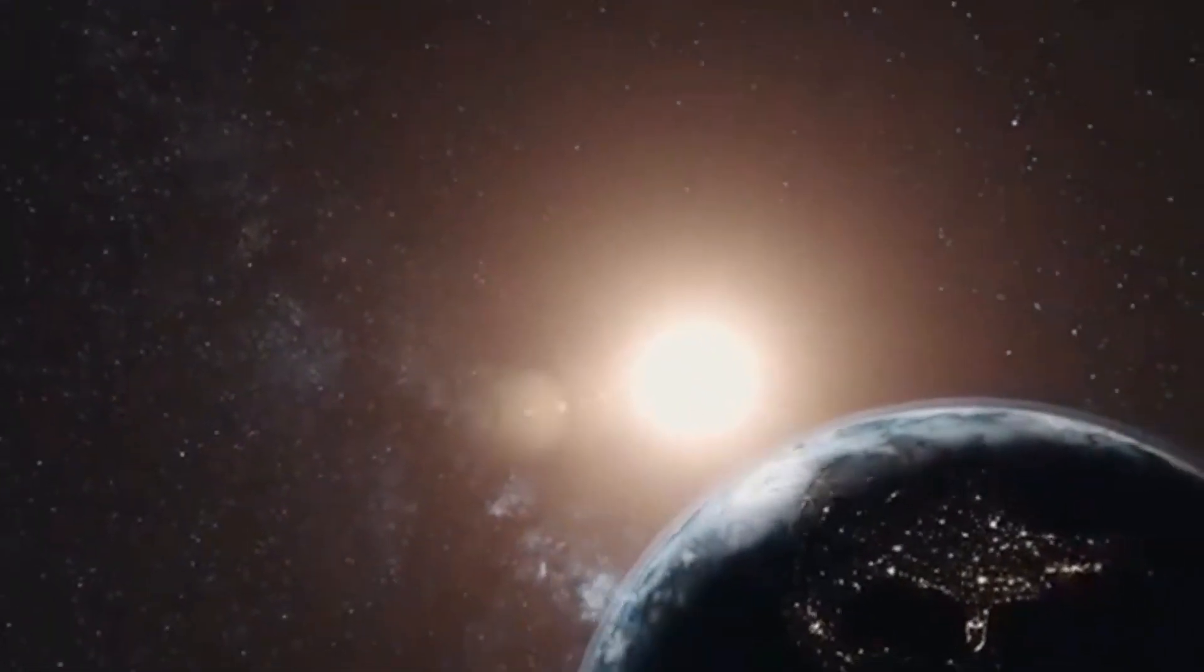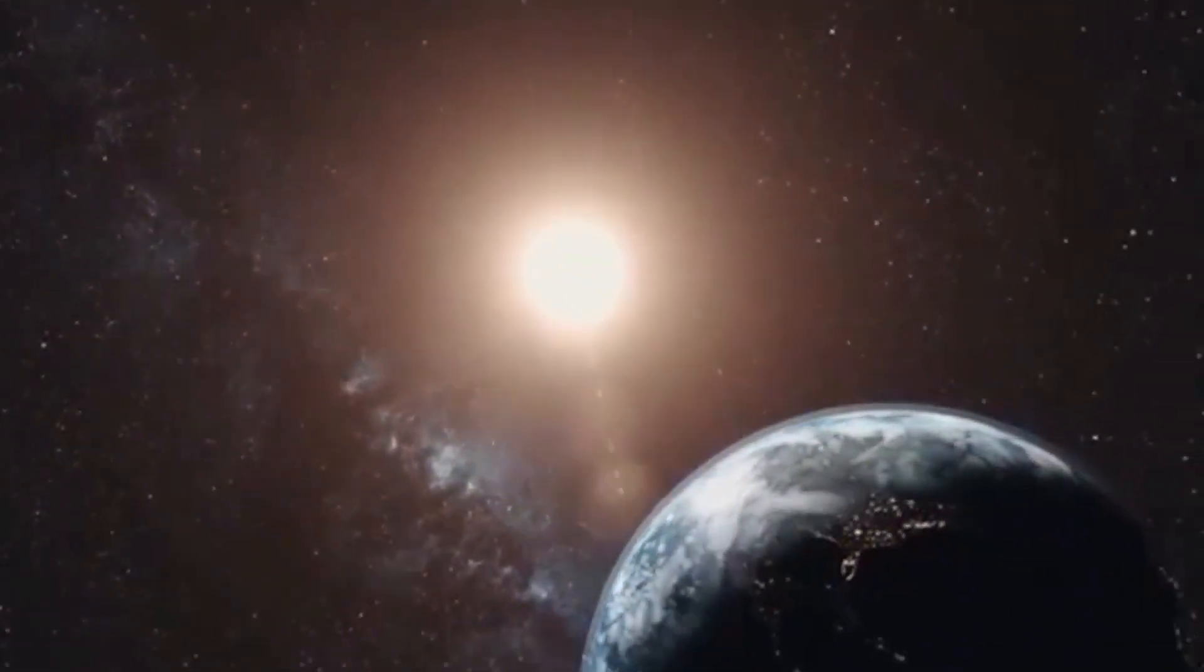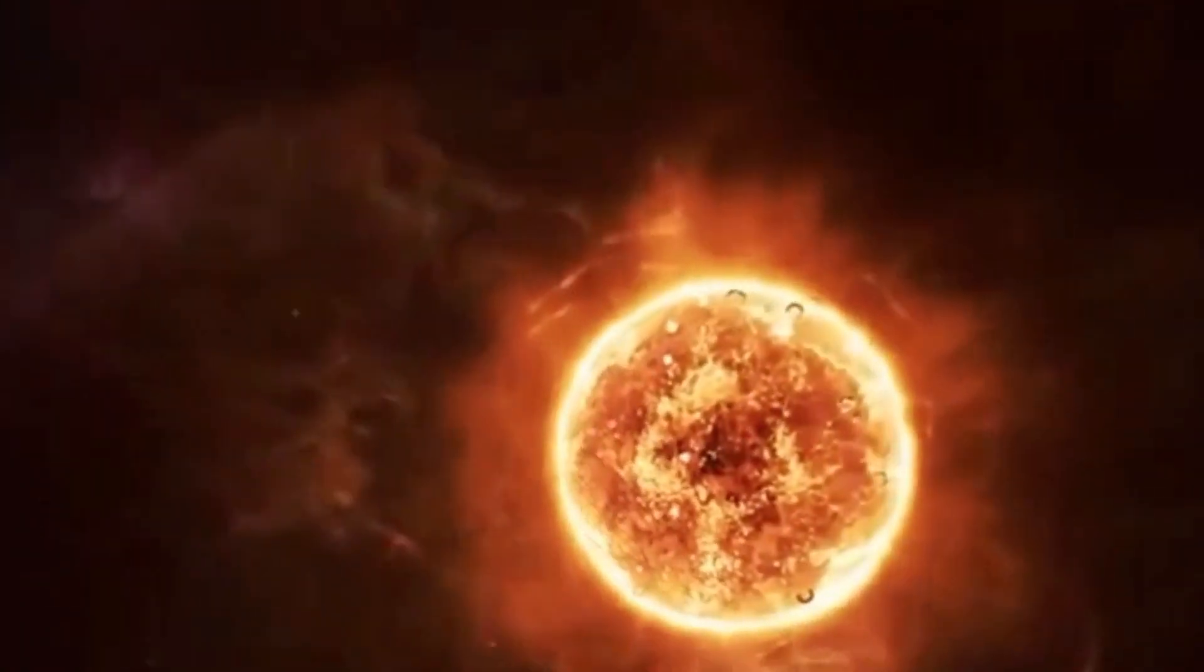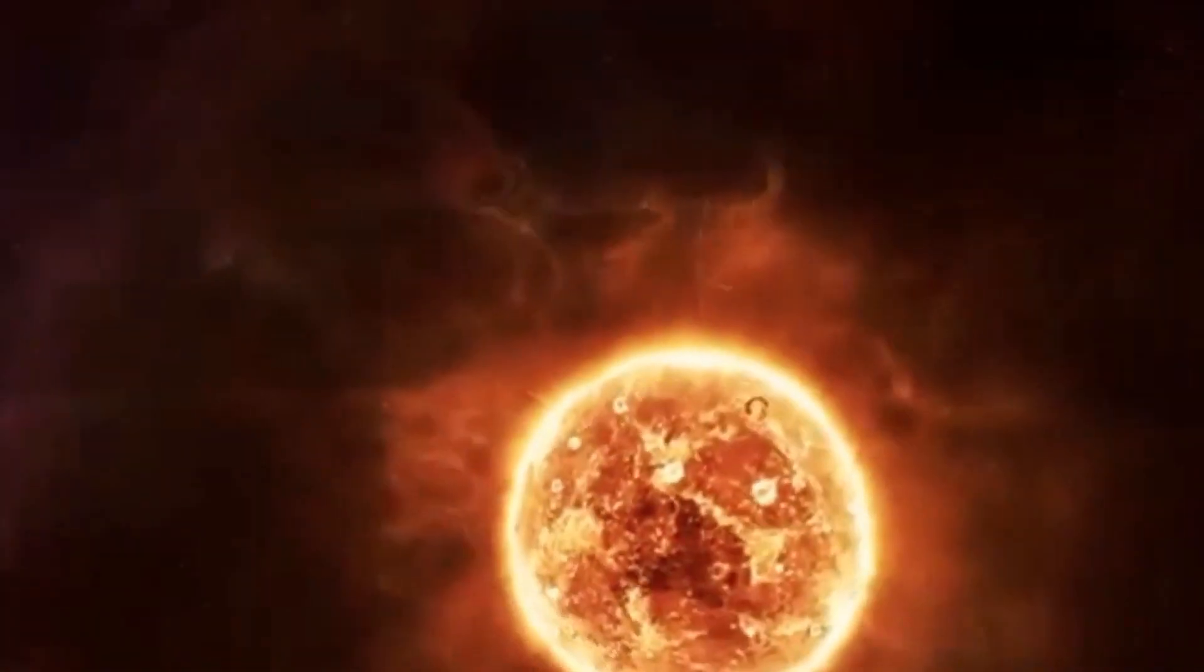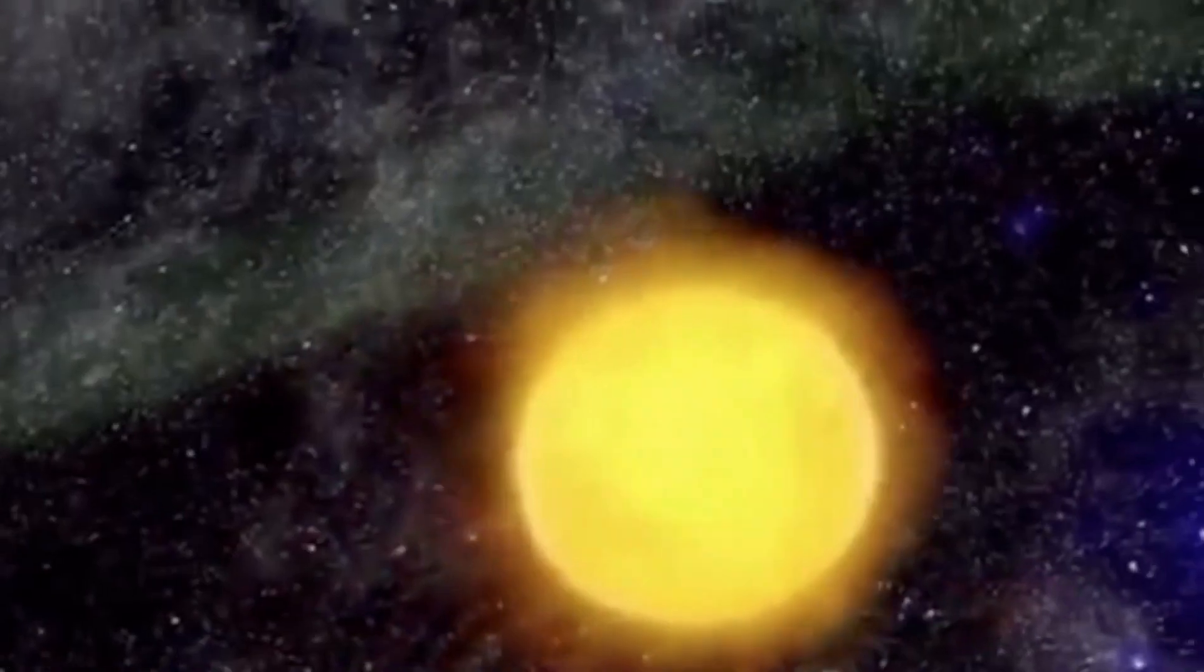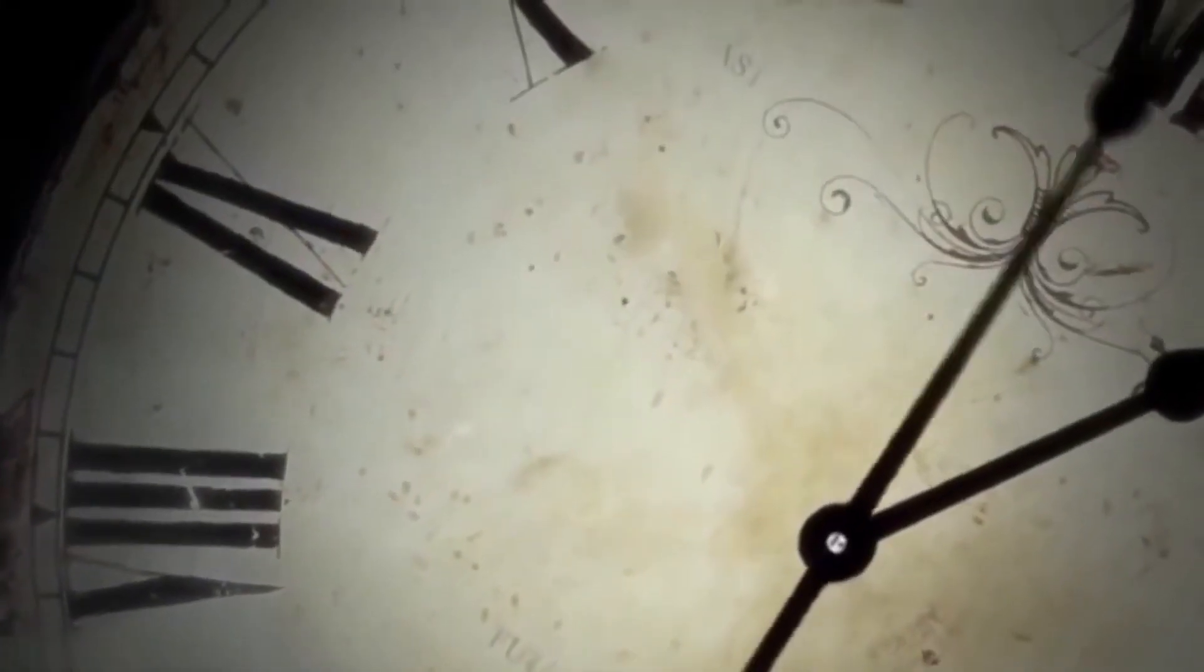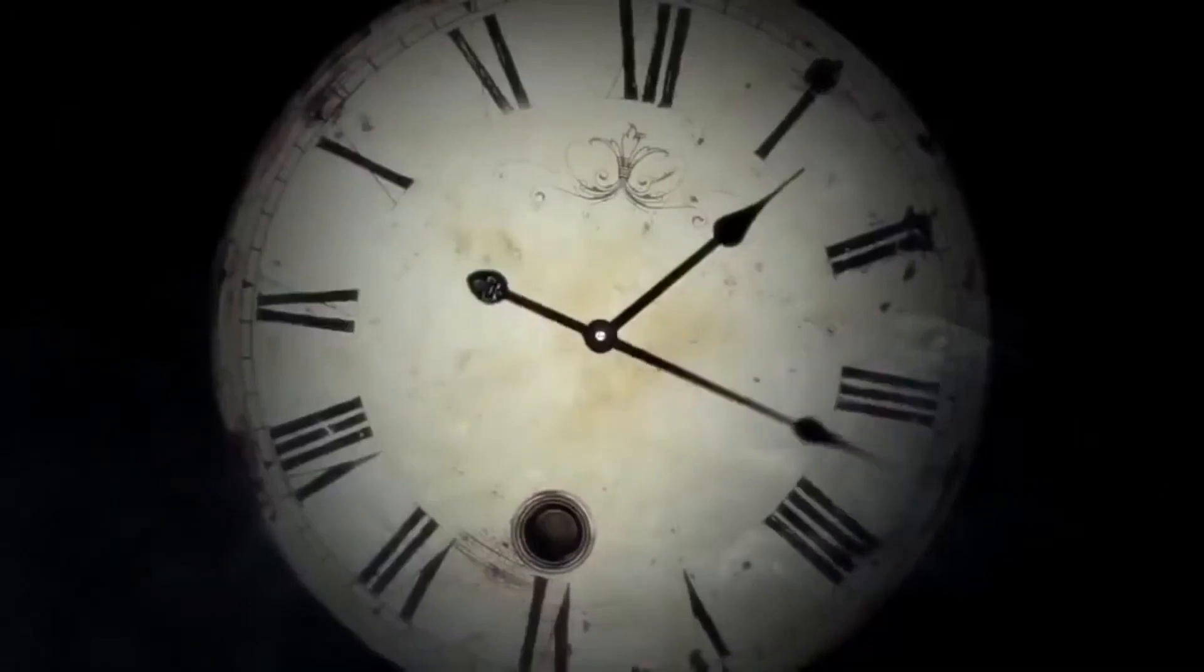The sun rotates counterclockwise. However, because it does not have a solid structure, its different parts rotate at different speeds. It takes the sun's equator about 25 days to complete one full rotation, while its poles do so in 35 days. Additionally, the sun orbits around the center of our galaxy, the Milky Way. It takes the sun about 225 to 250 million years to complete one orbit around the galactic center.